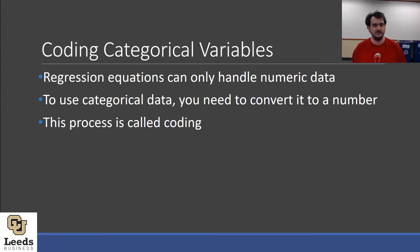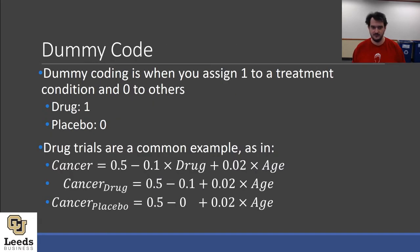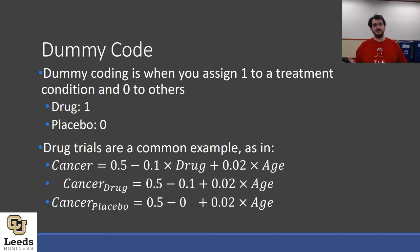There are different coding schemes available, and while the full dive into this is a little outside the scope of the course, I want to make sure that I cover some of the high points. First, dummy coding. Dummy coding is when you assign 1 to a treatment condition and 0 to all others. That's usually what's referred to because it's common in medical research. But anything where you have an intervention that you care about and you are interested in knowing how different things are when you do something versus what they would be otherwise, where you have a kind of neutral, boring otherwise, you can use dummy coding.